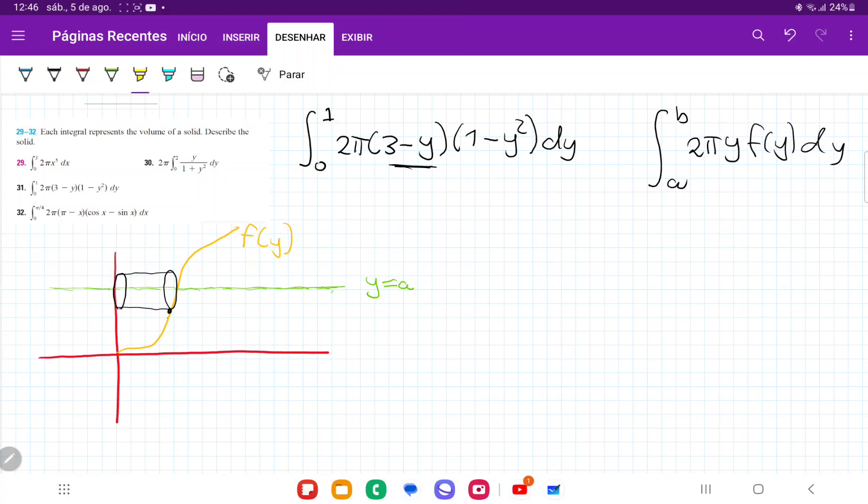So it appears that f of y is going to be this guy right here, dy is obviously dy, and then we have 2π counted for. So instead of y, we're going to get 3 minus y. This means that this axis of revolution was shifted. So let's just think about how we're going to represent that.